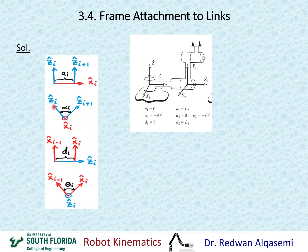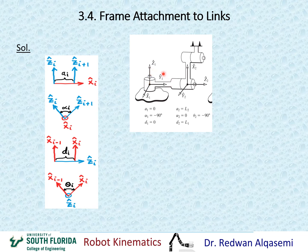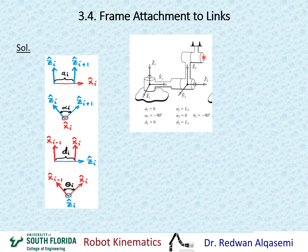For alpha1, we look at the angle between z1 and z2 about x1. Putting my thumb towards x1 and four fingers towards z1, to go from z1 to z2 I have to rotate negative 90 degrees, so alpha1 equals negative 90 degrees. For alpha2, we look at z2 and z3 about x2. Since they are both pointing in the same direction, the angle between them is zero, so alpha2 equals zero.